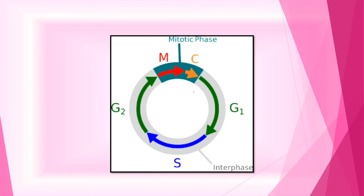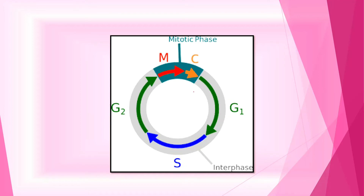In the cell cycle, interphase is the resting or preparatory phase. During interphase, the cell synthesizes proteins, replicates DNA, and prepares to divide in the M phase. The chromatin will be in its relaxed form during interphase.